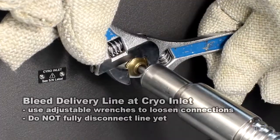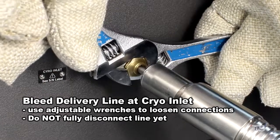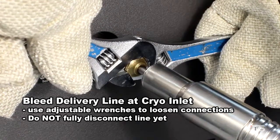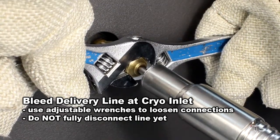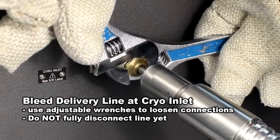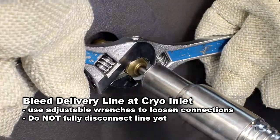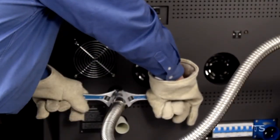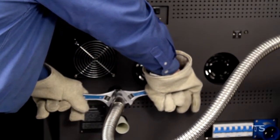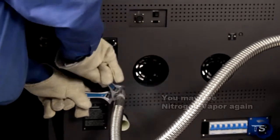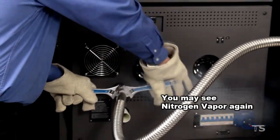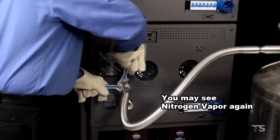Once the blue valve is closed, you need to bleed the delivery line dry of LN2. Bleed the line by using your adjustable wrenches to loosen the delivery line at the cryo inlet. Do not fully disconnect the line yet. You want the nitrogen in the line to escape as nitrogen gas. You may see nitrogen vapor when this happens, just like you did when connecting the line.